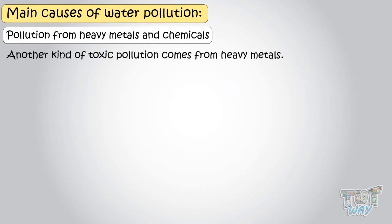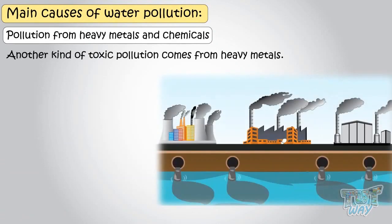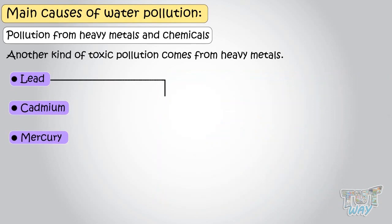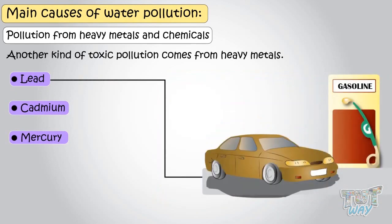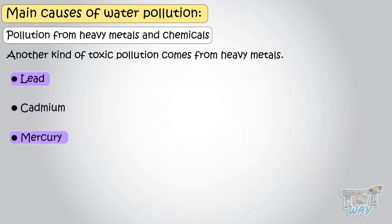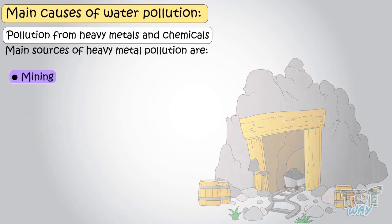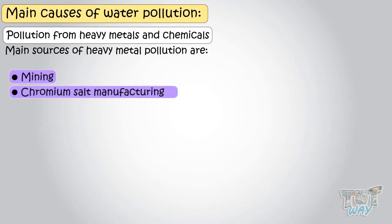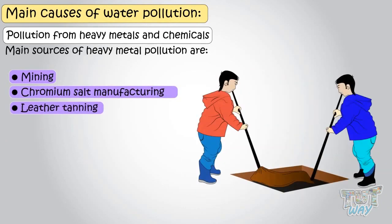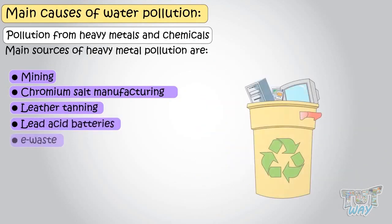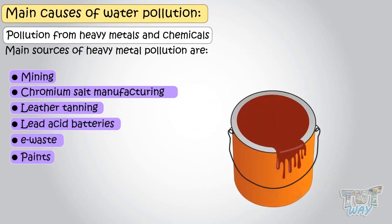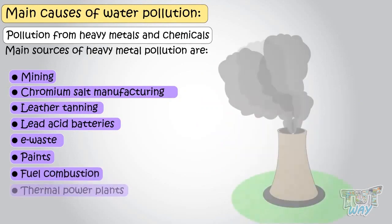Another kind of toxic pollution comes from heavy metals, such as lead, cadmium, and mercury. Lead was once commonly used in gasoline, though its use is now restricted in some countries. Mercury and cadmium are still used in batteries. Main sources of heavy metal pollution are mining, chromium, salt manufacturing, leather tanning, lead acid batteries, e-waste, paints, fuel combustion, and thermal power plants.